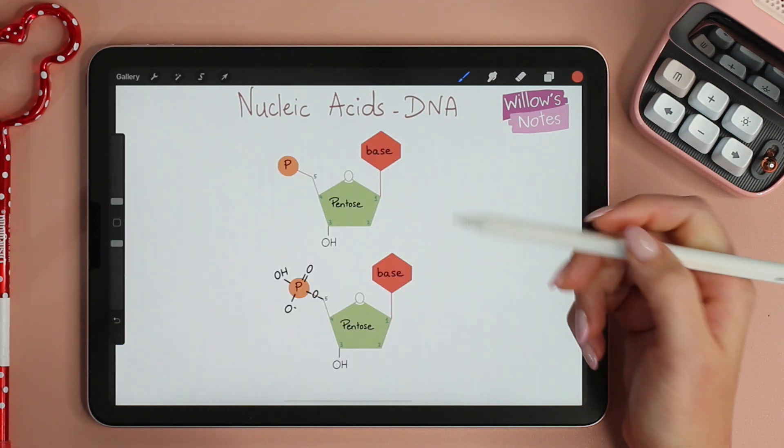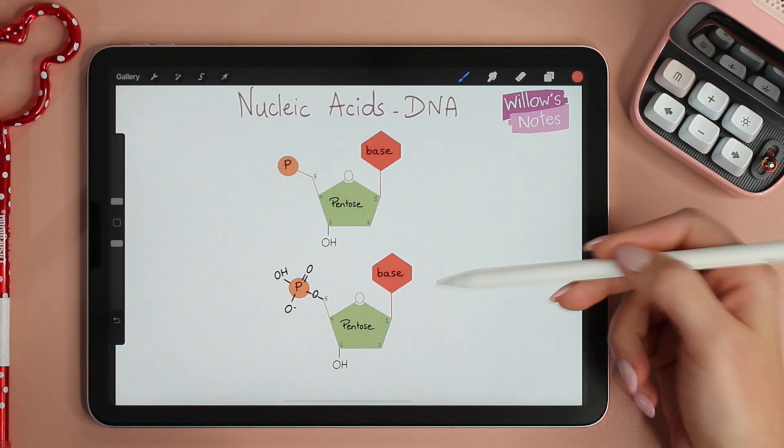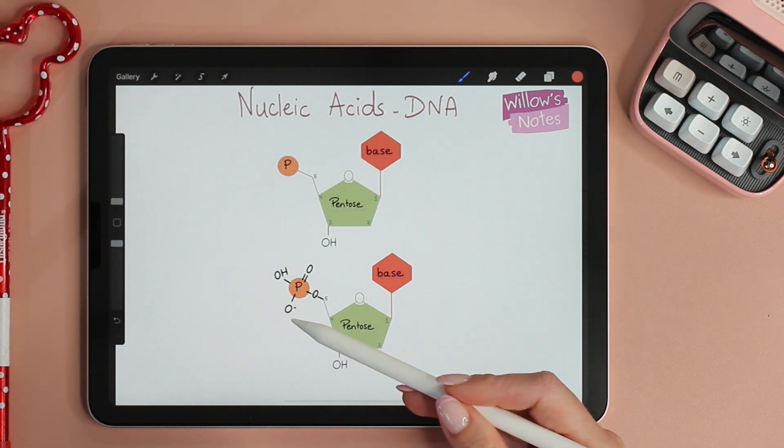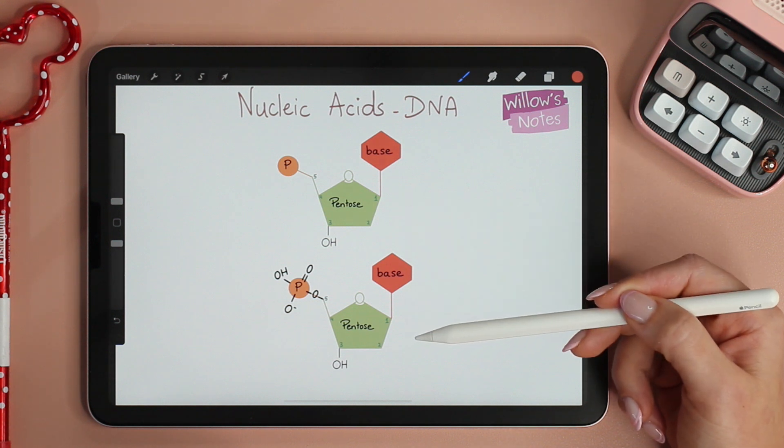For simplicity, I've sketched the phosphate group as P. But now we need to draw a proper phosphate to show how two nucleotides will condense with one another.